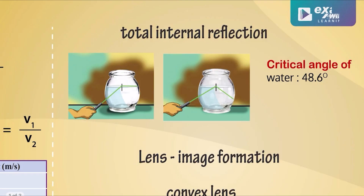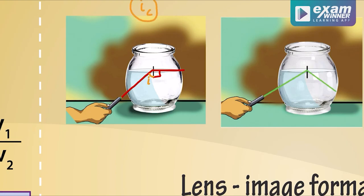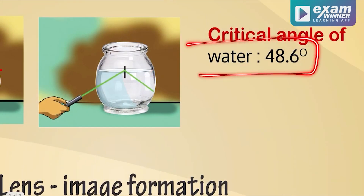The next thing is total internal reflection. As we increase the incident angle, the refracted angle eventually reaches 90 degrees. We call this the critical angle, denoted as C. For example, the critical angle is 48 degrees.